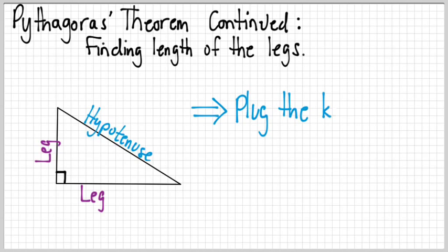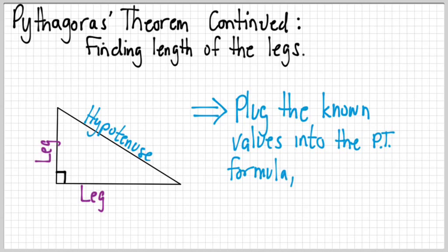So there's basically one step, or maybe kind of a couple steps here. Basically you're going to plug in the known values, whatever bits you do know, whether it's a hypotenuse or one leg or whatever. Plug them into the formula for Pythagoras Theorem.